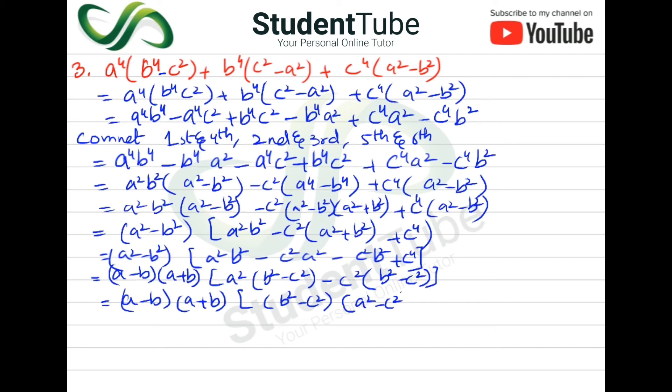And (a^2-c^2). The answer will be (a-b)(a+b)(b^2-c^2)(a^2-c^2). Applying the formula to (b^2-c^2) gives (b-c)(b+c), and (a^2-c^2) becomes (a-c)(a+c). Final answer: (a-b)(a+b)(b-c)(b+c)(a-c)(a+c).